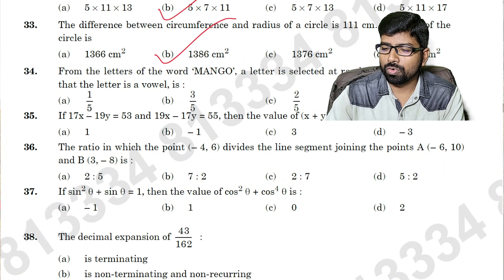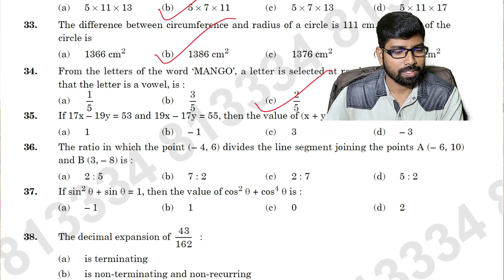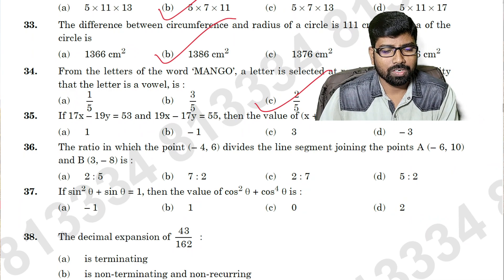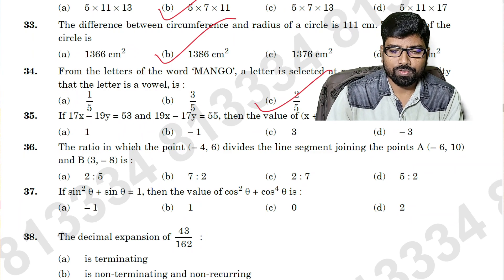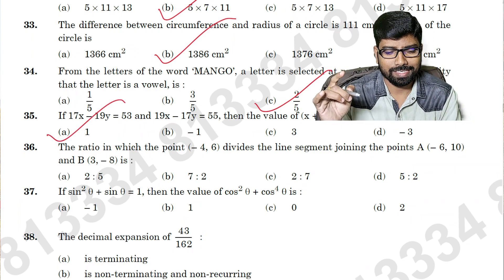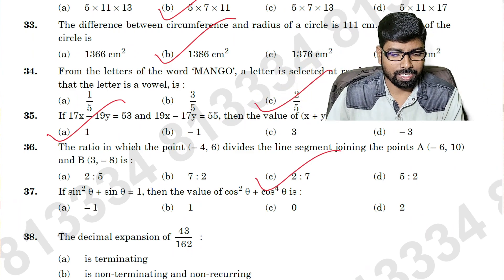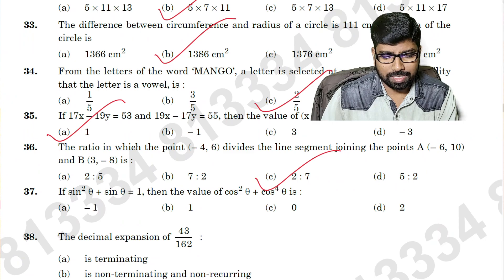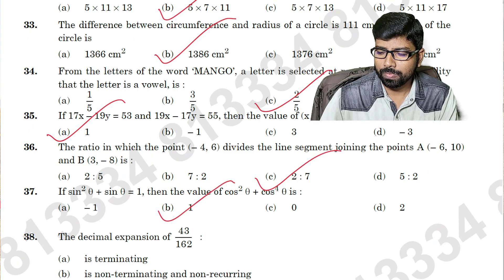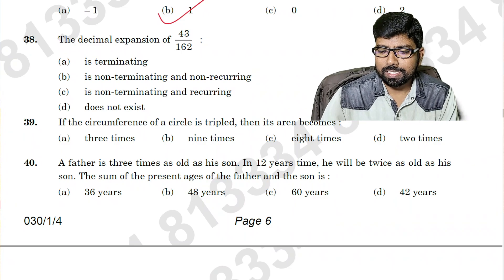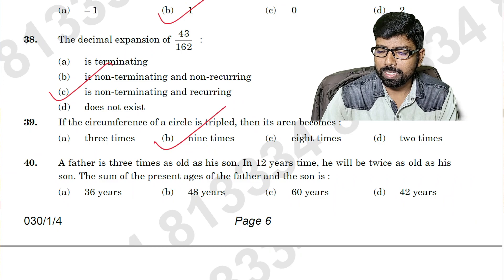Question number thirty-four: option C. Question number thirty-five: option A. Question number thirty-six: option C — you can see here. Question number thirty-seven: option B. Slowly we will go to the next question. Question number thirty-eight: option C. Question number thirty-nine: option B.